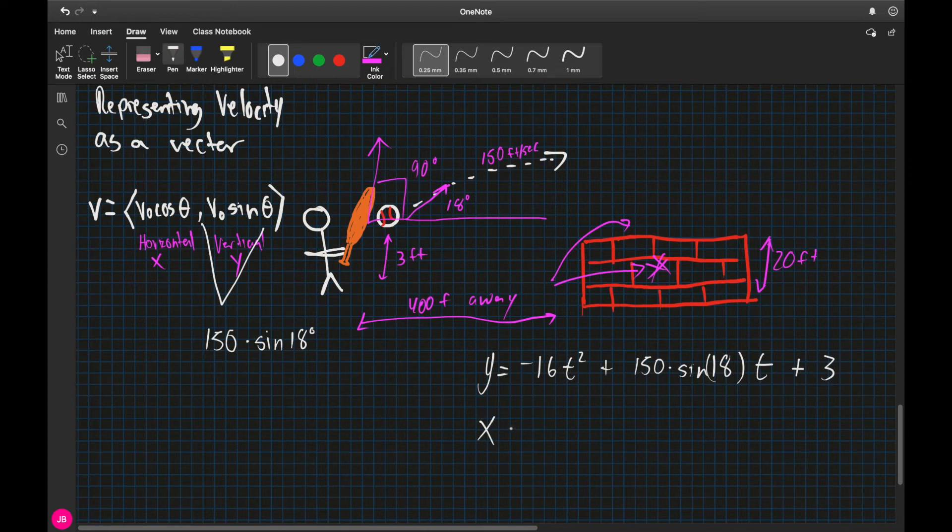Now, for my x, it's actually a little bit simpler, because since we're not taking into account wind resistance, and gravity does not work horizontally, there is no need for this gravitational force in x.